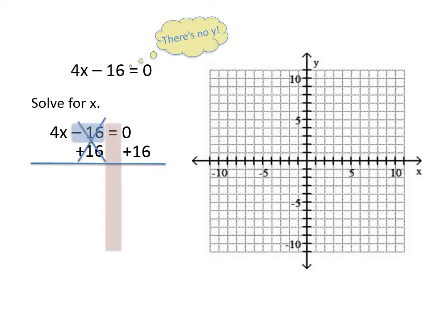That will remove it from the left and move it over to the right. You can bring the 4x down on the left, and 0 plus 16 is 16 on the right. So your equation now becomes 4x equals 16, and the last step is dividing by 4 on both sides, and getting the line x equals 4.